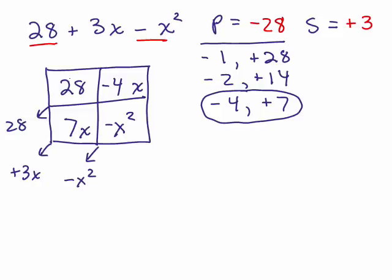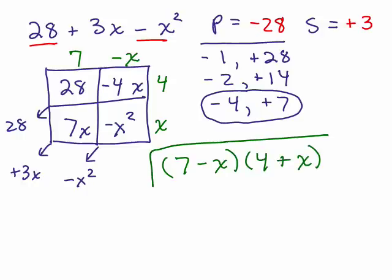So out of the first column, I pull out the greatest common factor. That's 7. 7 times what will give you 28? 4. 4 times what will give you a negative 4x? Negative x, right? 4 times negative x. And then negative x times what will give you a negative x²? x. So it works. 7 - x times 4 + x. So if you want to use the box method, it works just fine.